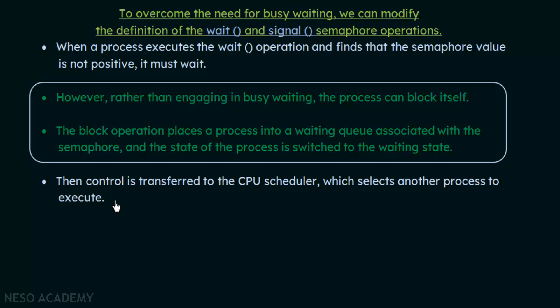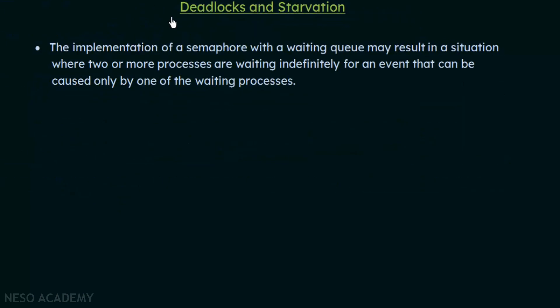This is how we modify the definition of the wait and signal operations to avoid busy waiting — using a waiting queue and switching the process to a waiting state. However, though we can implement semaphores using a waiting queue, it still leads to something known as deadlocks and starvation.